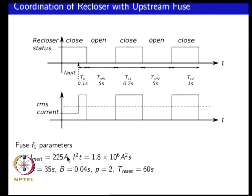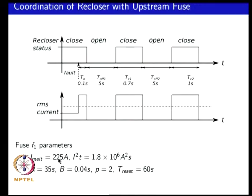For the upstream fuse, we assume a melt current of 225 amps. The I²T is 1.8×10⁶ ampere-squared seconds, and the fuse needs at least 2 cycles (40 milliseconds) to operate. It has an extremely inverse characteristic with P=2, giving A=35, and a reset time (cool-down time) of 60 seconds — meaning after it gets fully hot, after one minute the fuse cools back to nominal temperature.